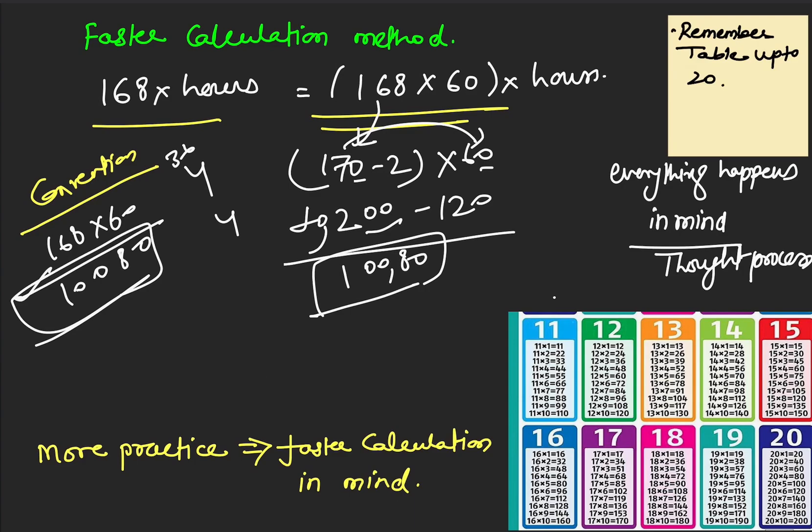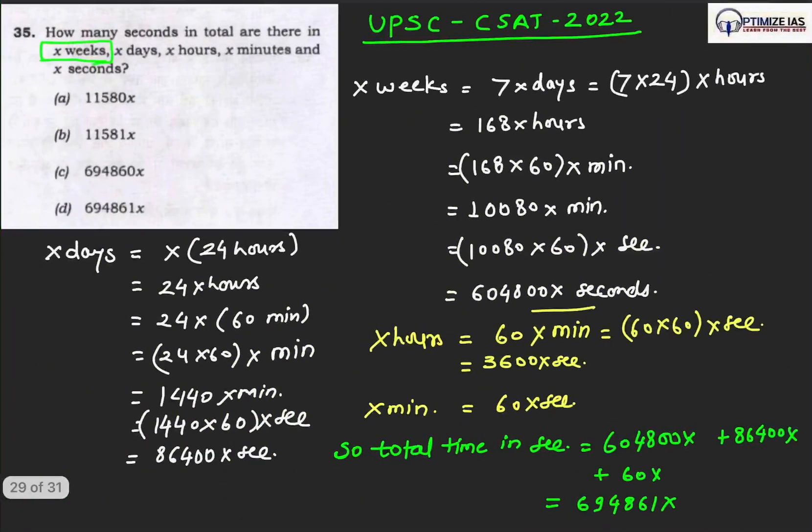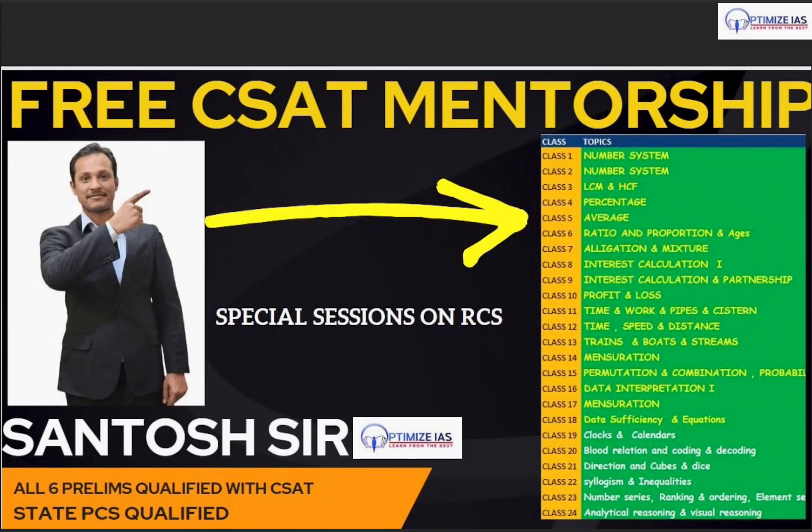This is how the thought process goes. Everything has to happen in mind actually. For calculation, you must remember the table and you must know the table up to 20, and other calculation things you should know.